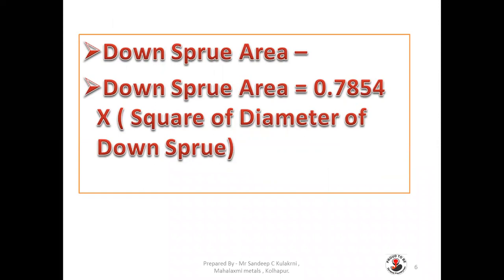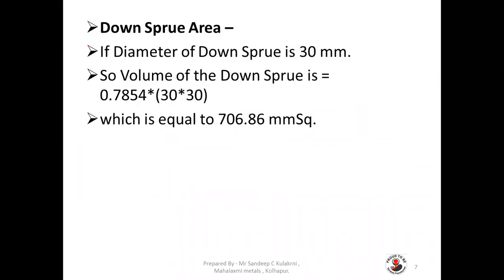Let us start with the downspout area calculation. How to calculate downspout area? Downspout area is equal to 0.7854 multiplied by the square of the diameter of the downspout. If the diameter of our downspout is 30 mm, then the area of the downspout is 0.7854 × 30 × 30, that is 706.86 mm square.